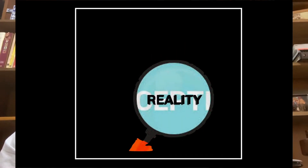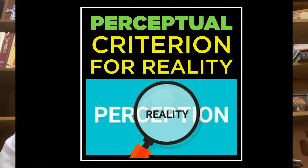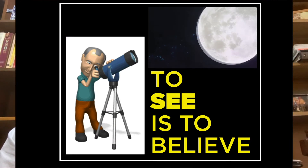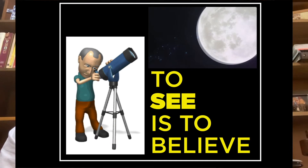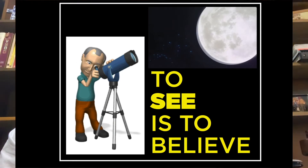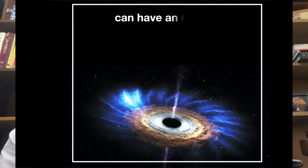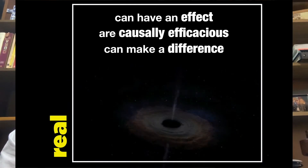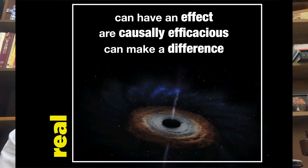The more common, default criterion that we use to ascribe reality to something is called the perceptual criterion. Instead of that, we have been offered an alternative: the causal criterion for reality. This means it's not enough to say you believe something just because you perceive it — that's not all there is to it. Things that can have an effect, things that are causally efficacious, that can make a difference even if they haven't yet, are also real.